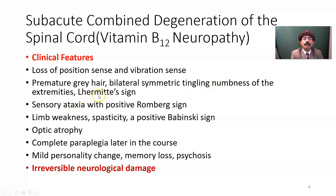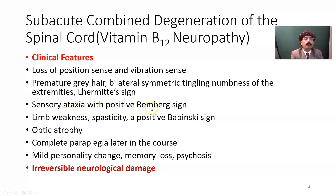Lhermitte's sign is an electric shock-like sensation due to flexion of the neck, with pain going to the back and lower limbs. This is an electric shock-like symptom due to flexion of the neck. Sensory ataxia with positive Romberg sign — a person cannot keep balance when they close their eyes.